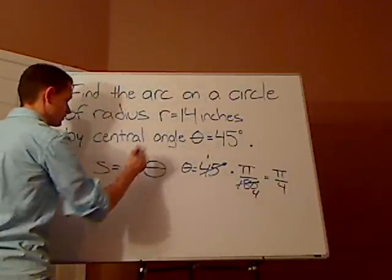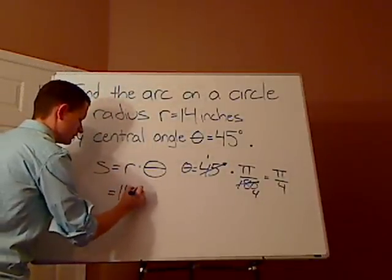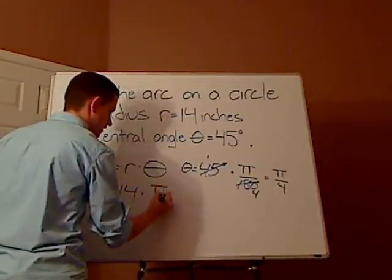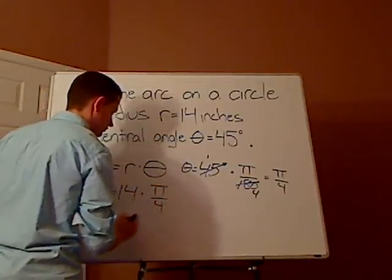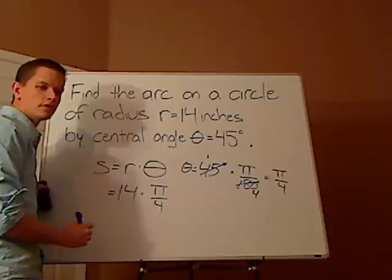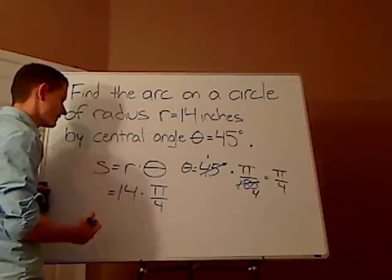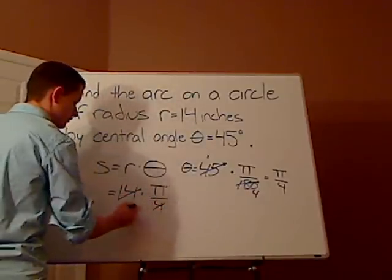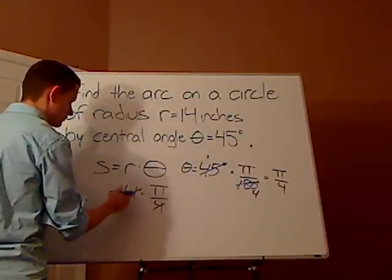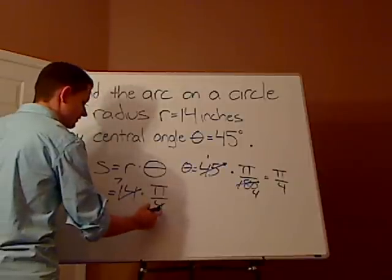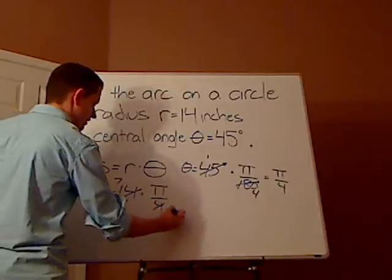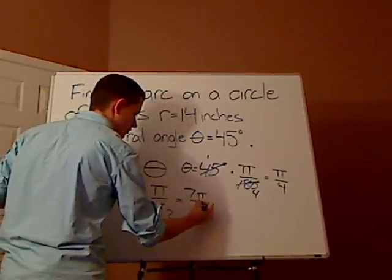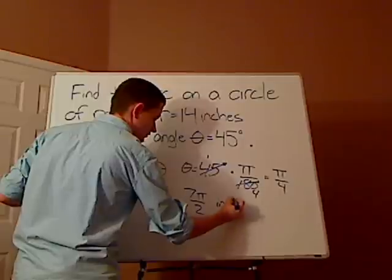So I'm going to plug that in. And I have my radius, which is 14. So I have 14 times pi over 4. Now, sometimes you might be able to get the exact answer. The exact answer, if you simplify this, 2 goes into 14 seven times, and 2 goes into 4 two times. So you have 7 pi over 2. And that's in inches.